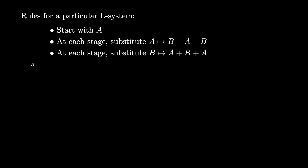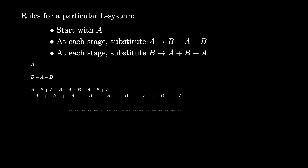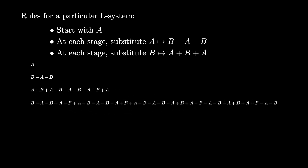Let's see the first few stages of this process. Starting with A, the first stage results in B dash A dash B. Then the second stage results in the string A plus B plus A dash B dash A dash B dash A plus B plus A. We can continue this process over and over as long as we like, each time applying the production rules.